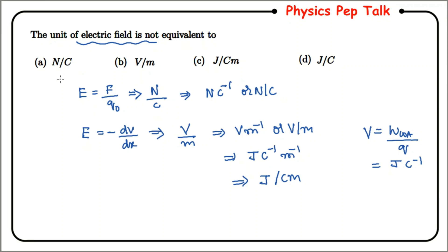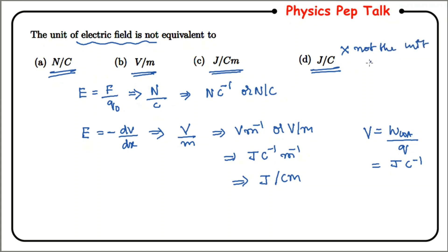Let us look at the options: Newton per Coulomb — yes, this is the unit of electrical field. Volt per meter — this is again the unit of electrical field. Joule per Coulomb meter — this is again the unit of electrical field. Joule per Coulomb — this is NOT the unit of electrical field. Therefore this will be the correct answer.